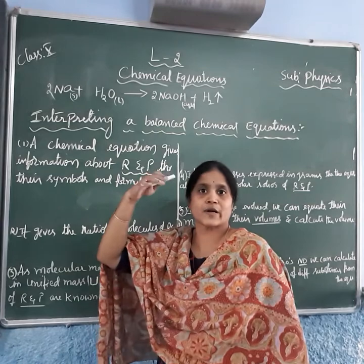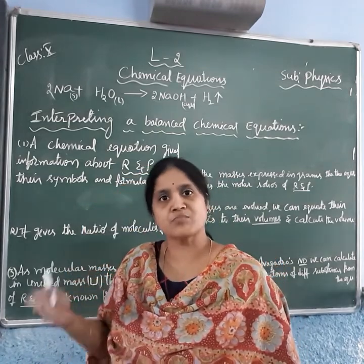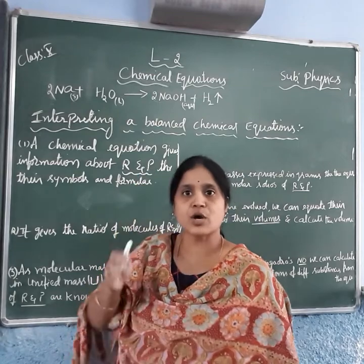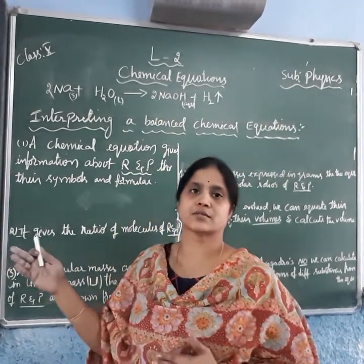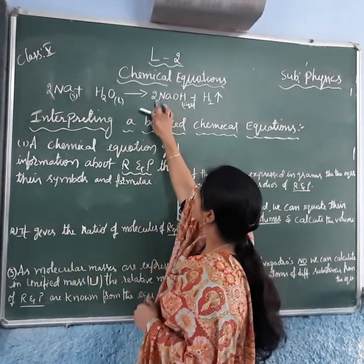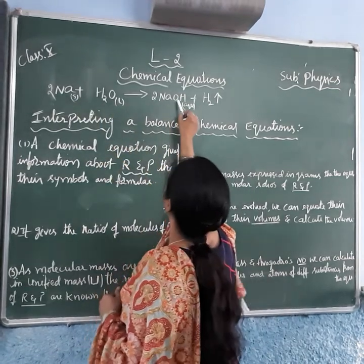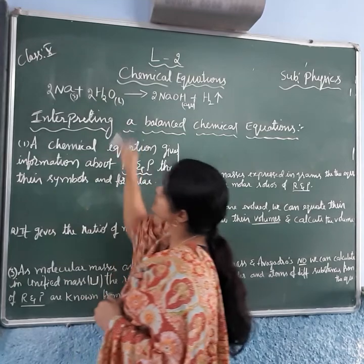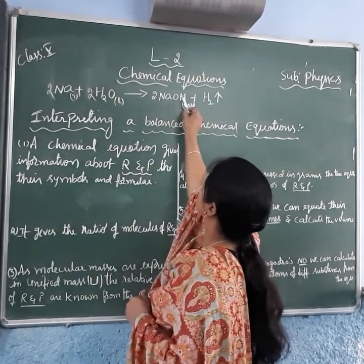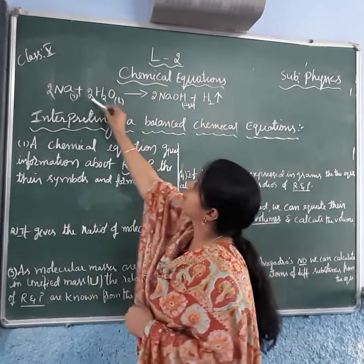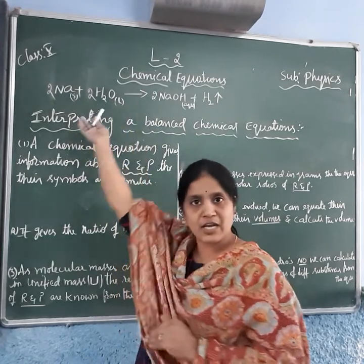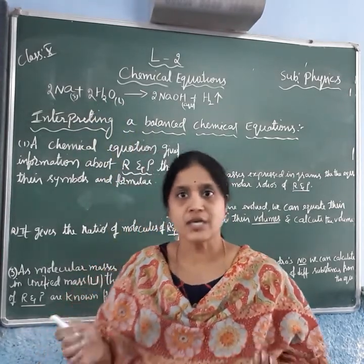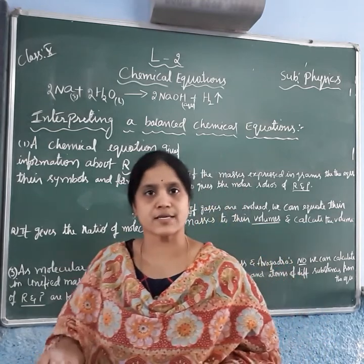You can write the steps or simplify depending on the marks required. Now with 2 sodium on both sides, check oxygen: 2 on the left, so write 2 on the right. Then check hydrogen: 4 on the left and 4 on the right. So the given equation is balanced. After balancing, we will discuss the points.